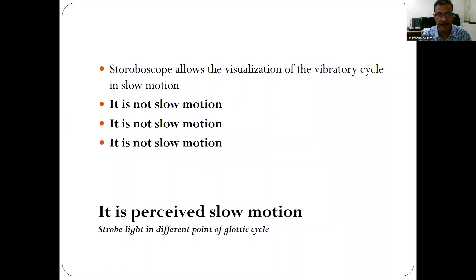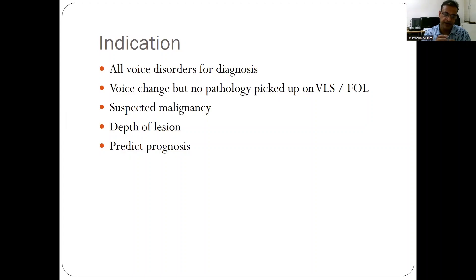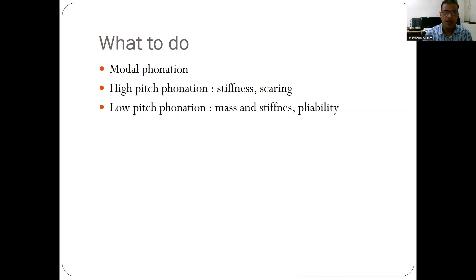Stroboscopy is indicated for all voice disorders. Sometimes patients come with voice changes but flexible or rigid scopy shows no problem — these ideal cases particularly benefit from stroboscopy. It is also used when we are suspecting malignancy, when we see a lesion and want to know its depth, how it affects the body of the vocal fold, and to predict prognosis.